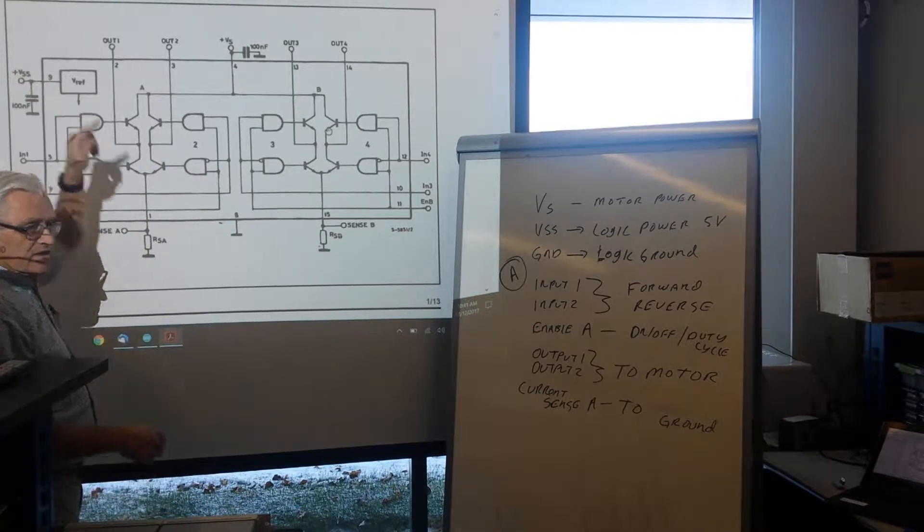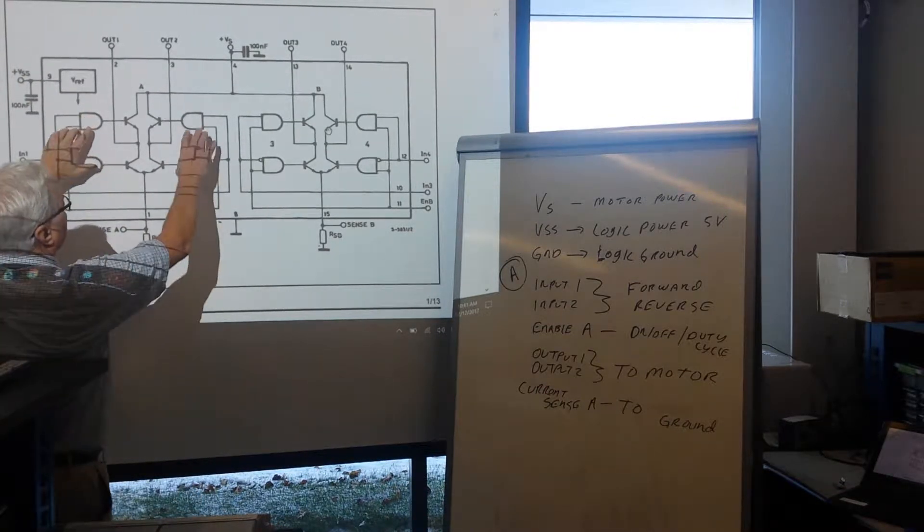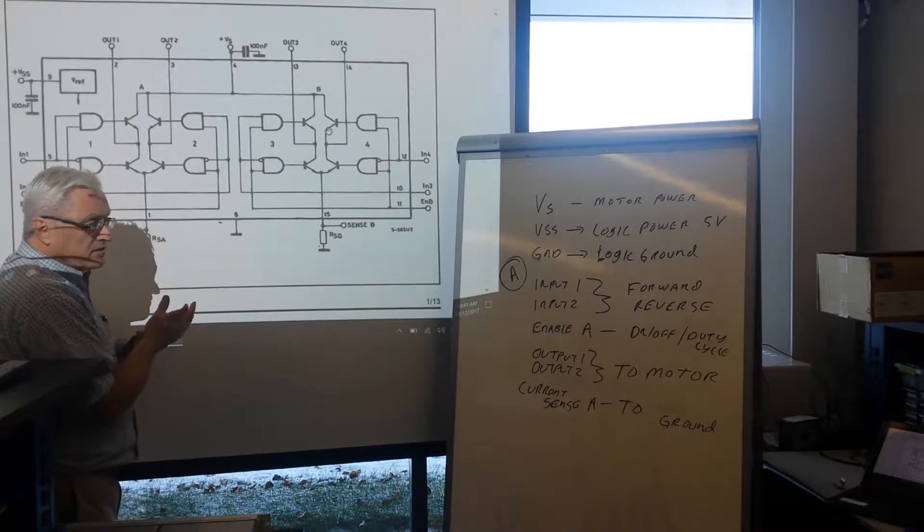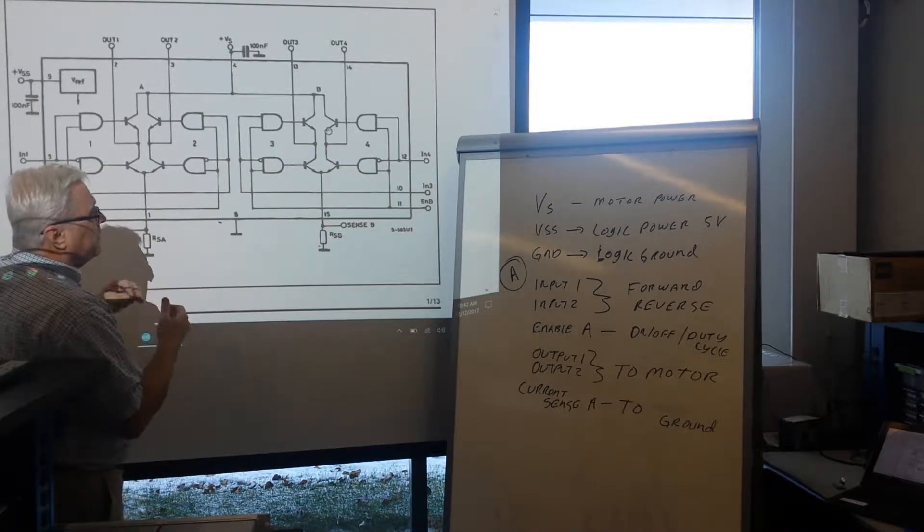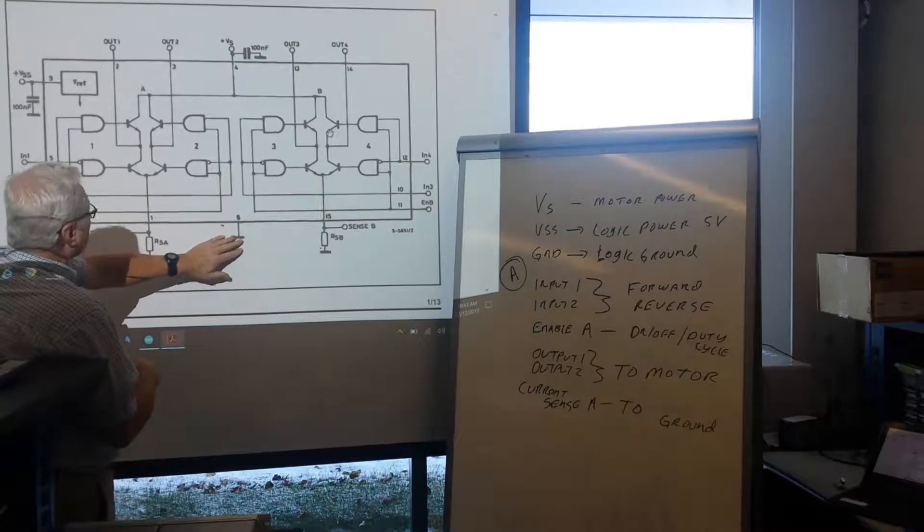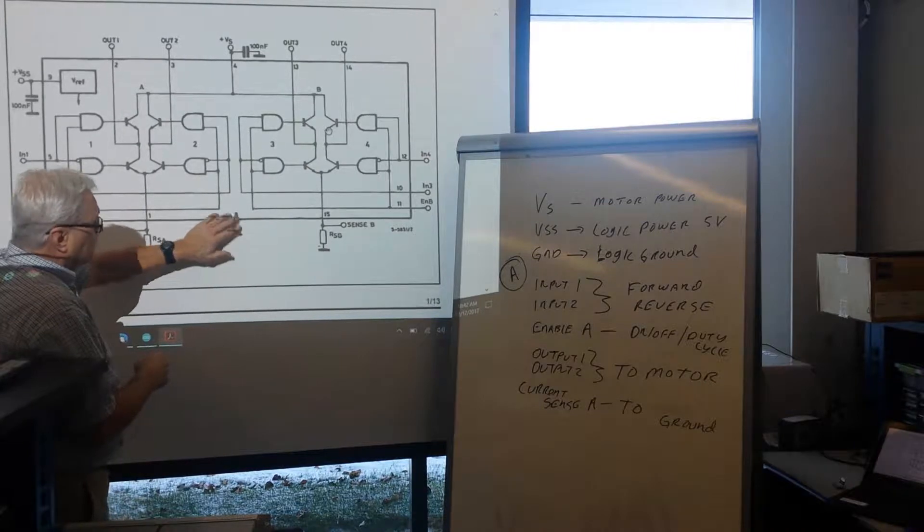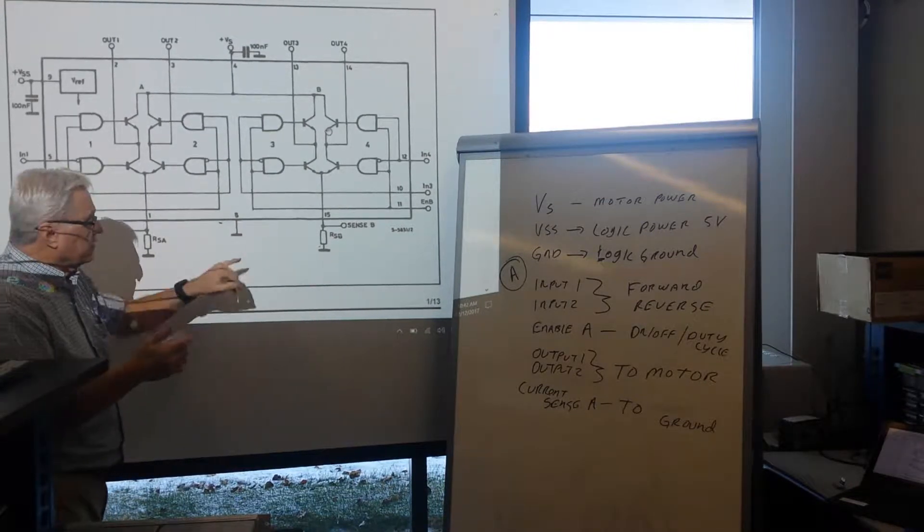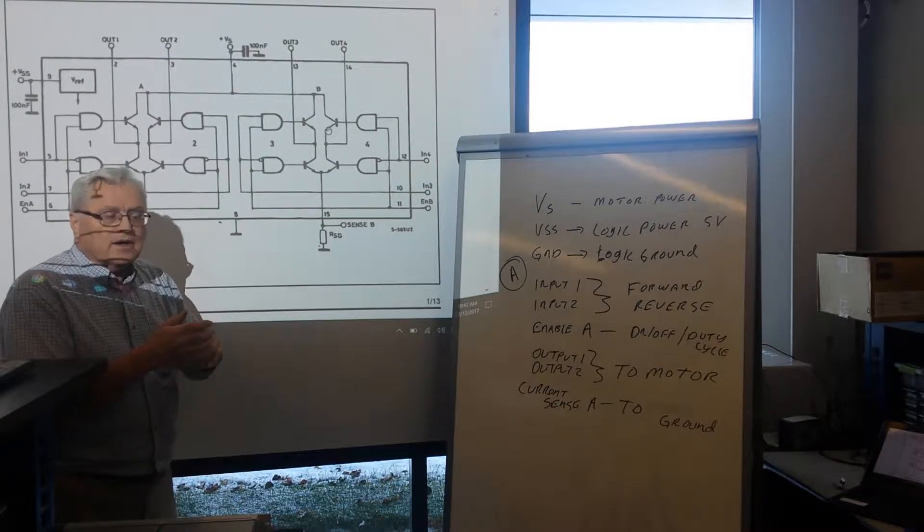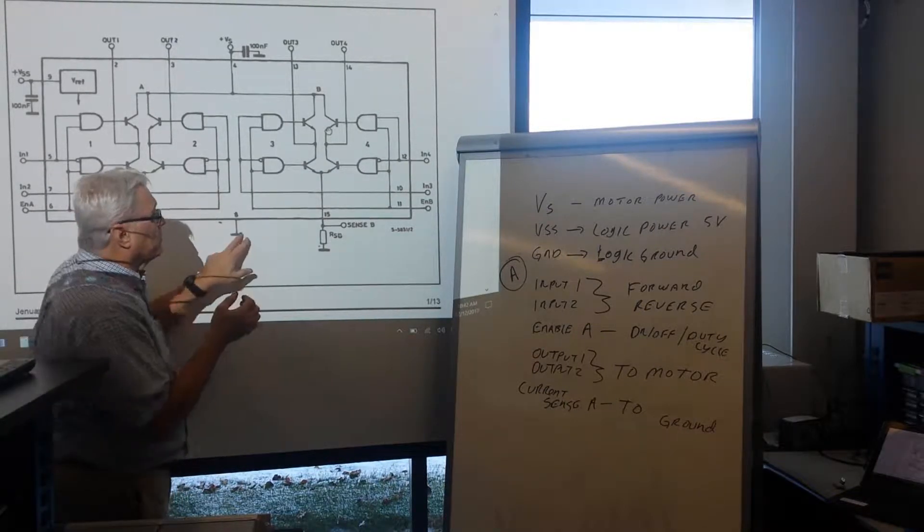So VS is the power for the motor, up to 48 volts. We're going to be using 7 volts and that's the power in the top of my bridge. And it goes to both the bridges. The VSS is our logic power to control all of these transistors and logic devices. That's typically our plus five volts. There's also a logic ground, or a ground in general. That goes to ground and that ground goes to the ground of your microcontroller and to the ground of the power supply for the motor.